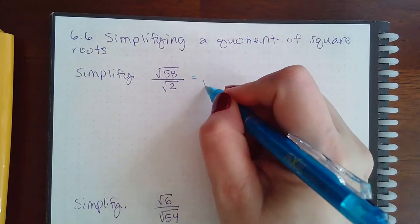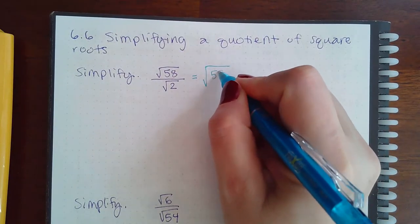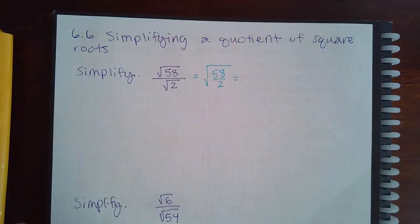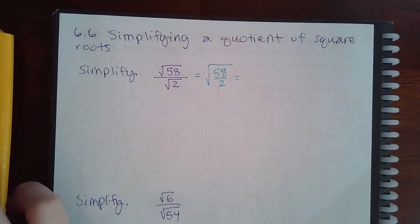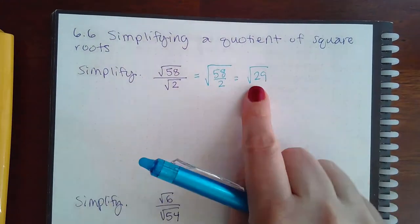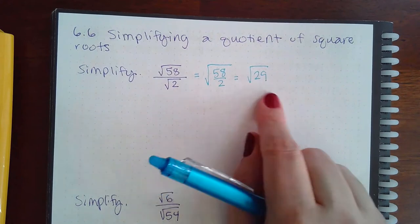What we want to do is write this as one giant fraction and then simplify that. So 58 over 2 simplifies to 29, and 29 is a prime number. I cannot break it up, so I cannot simplify square root of 29.